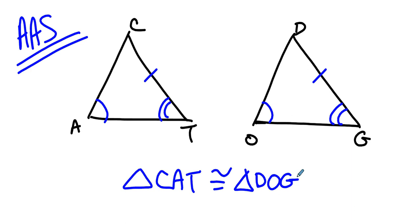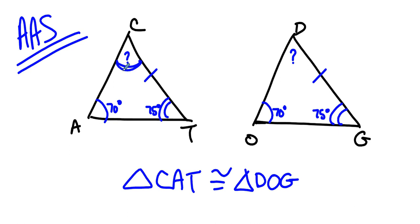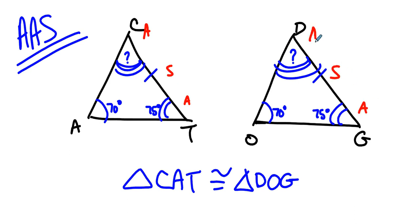Pause for a moment — see if you know why. Here's my thought: if we know what this angle is and we know what that angle is — let's imagine this is 70 degrees and this is 75 degrees — do you know what that third angle is? Sure you do, because you know what the angles of a triangle add up to. So you know that angle ACT is congruent to angle ODG. Well now you've got angle-side-angle congruent to angle-side-angle, and so these triangles are in fact congruent.